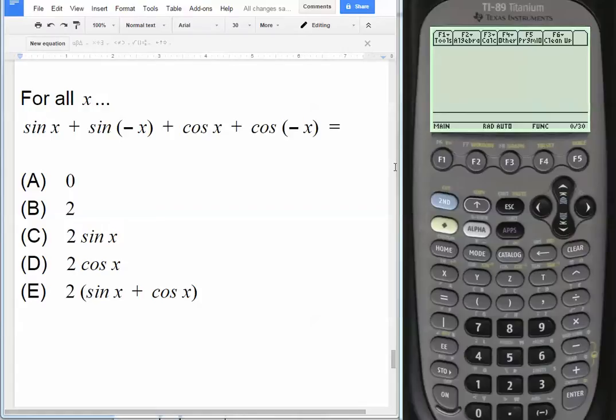So, if we look at the first question here, it just says for all x, we give you this equation: sine x plus sine negative x plus cosine x plus cosine negative x equals. Which one of these choices does it simplify to? Well, let's just plug it in.